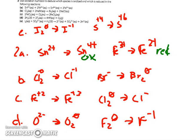The second one: chlorine goes from elemental to ionic, so it's gaining electrons or being reduced, whereas bromine is going the opposite direction and being oxidized. C: Fe 2+ to Fe 3+ is a loss or oxidation, whereas chlorine is gaining electrons to become an ion, so it's reduced.